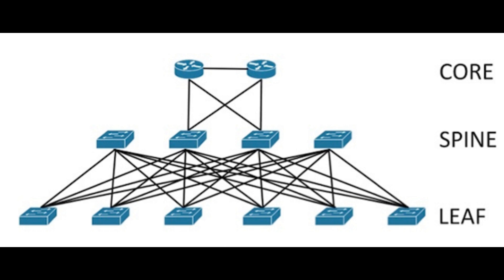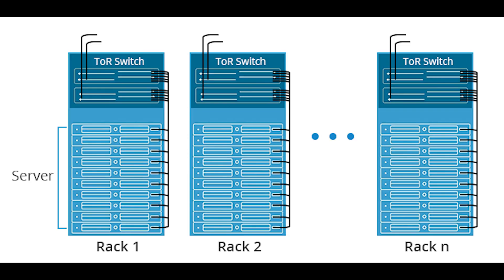This model also ensures that no matter which leaf switch is connected to the server, the traffic always has to cross the same number of devices to get to another server, keeping latency at a steady level. In today's leaf-spine topology, top of rack switches are leaf switches attached to the spine switches. Switches located within the same rack are connected to an in-rack network switch, which is connected to aggregation switches usually via fiber cabling. The biggest advantage is that switches within each rack can be connected with cheaper copper cabling.